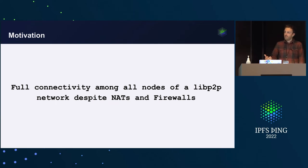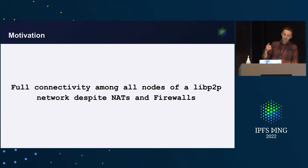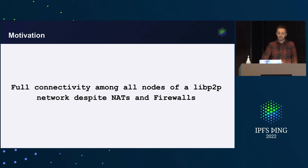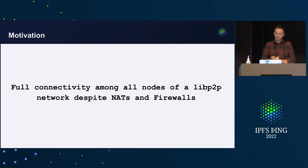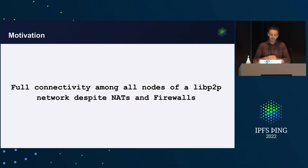What's the motivation behind hole punching? We want to have full connectivity among all nodes of a libp2p network despite NATs and firewalls. The requirements are: no centralized infrastructure, it should work with QUIC and TCP and possibly WebRTC, and it should integrate nicely into the libp2p stack.